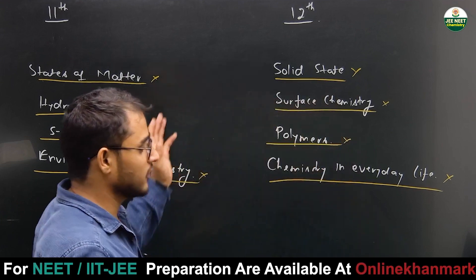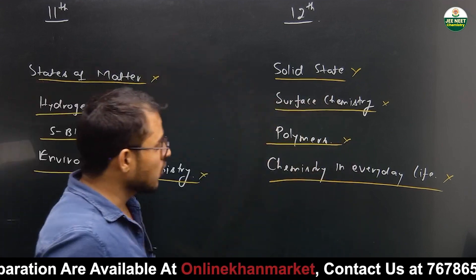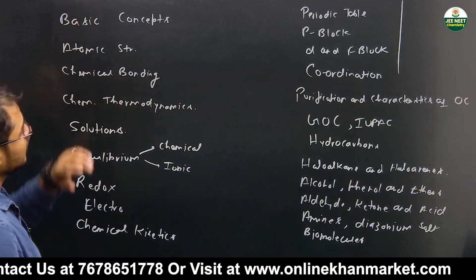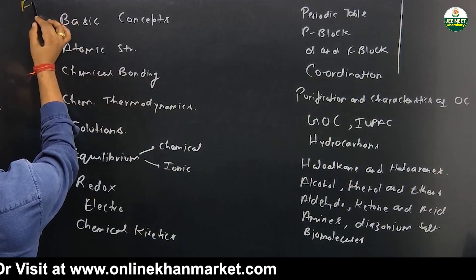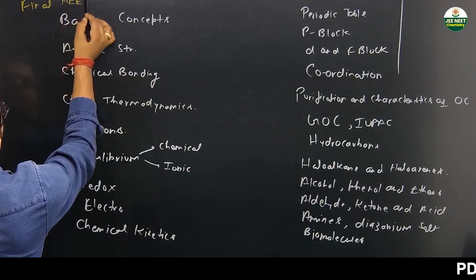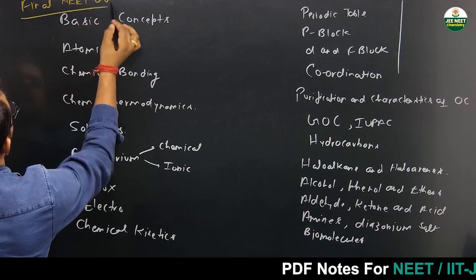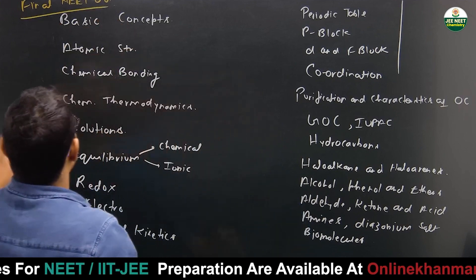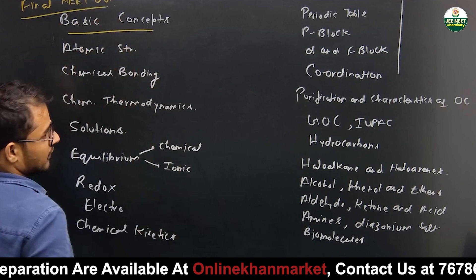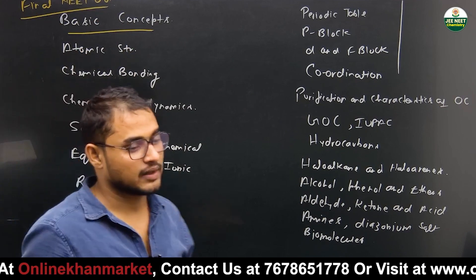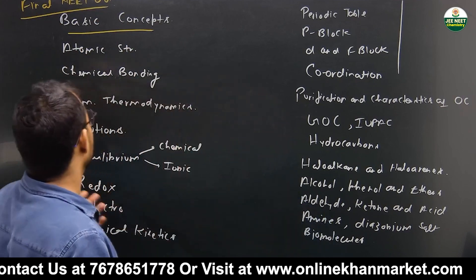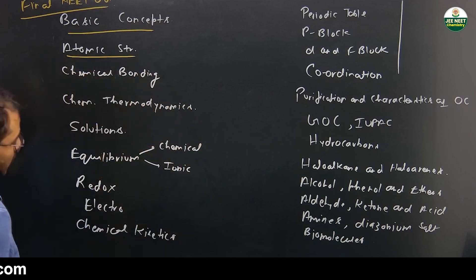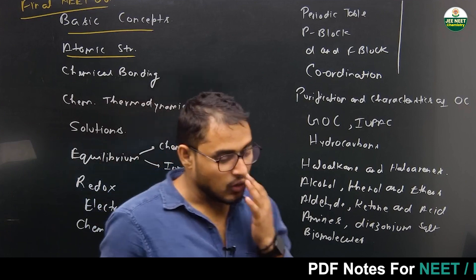Now, what is the remaining syllabus for NEET UG examination regarding chemistry? First, Basic Concepts, where we will deal with the number of moles, atoms, molecules, and the Law of Conservation of Mass, etc. Then, Atomic Structure — covering all topics such as Bohr's model, Pauli's Exclusion Principle, and related concepts.